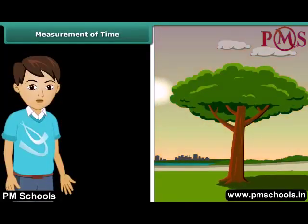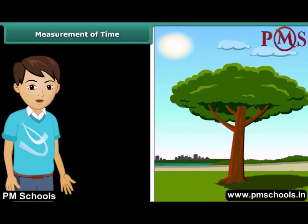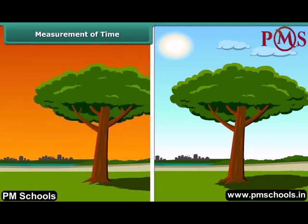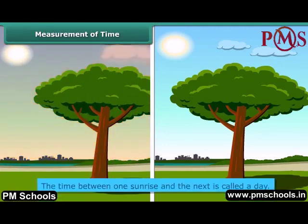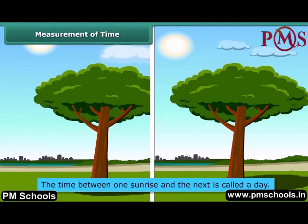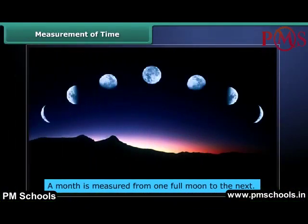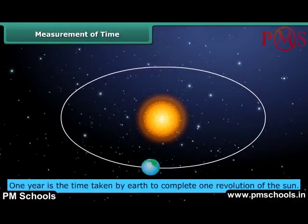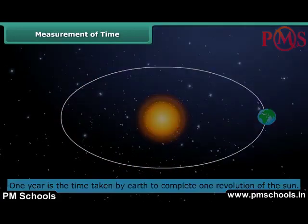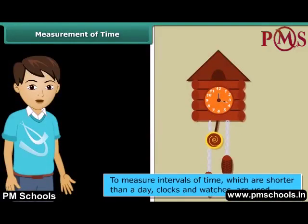Have you ever wondered how our elders could tell the approximate time of the day by just looking at the shadows? Many events in nature repeat themselves after definite intervals of time. For example, the sun rises every day in the morning. The time between one sunrise and the next is called a day. Similarly, a month is measured from one full moon to the next. One year is the time taken by the Earth to complete one revolution of the sun. To measure intervals of time which are shorter than a day, we use clocks and watches.